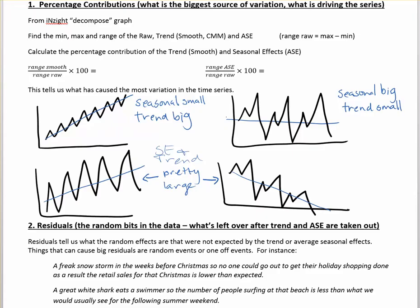So time series, we know it goes up and down. And it's trying to talk about is the biggest source of that variation throughout the whole time period, either from the seasonal or the periodic effects, or is it because of the trend?